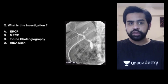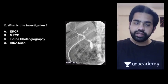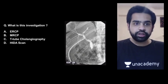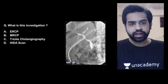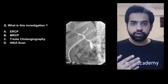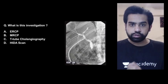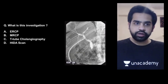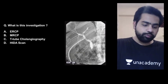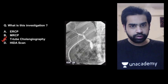The next question asks: what is the investigation shown in this image? Options are ERCP, MRCP, T-tube cholangiography, or a HIDA scan. This was asked in one of the central institutes recently. The answer is T-tube cholangiography.